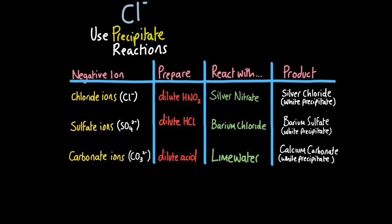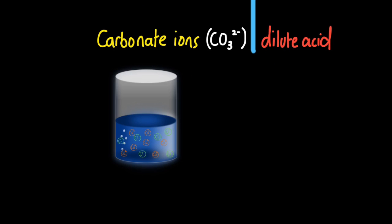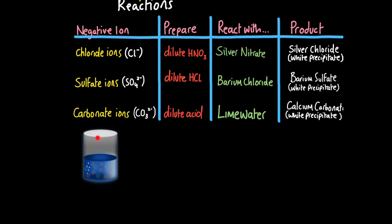It turns cloudy because it forms calcium carbonate. Because lime water is basically calcium hydroxide. So the calcium reacts with the carbonate to form calcium carbonate, which is also a white precipitate. But clearly for copper chloride, I need to test for chloride ions. So what I would say is, first I add a bit of dilute nitric acid. Then I react it with silver nitrate, which will produce the white precipitate silver chloride.